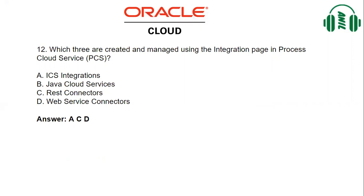Options are: ICS integrations, Java Cloud Service, REST connector, web service connector. When we are building processes in OIC, some situations come up where in the middle we need to call an OIC integration. Requirements are needed to call OIC integration, and we can do that — from processes, we can call OIC integrations.